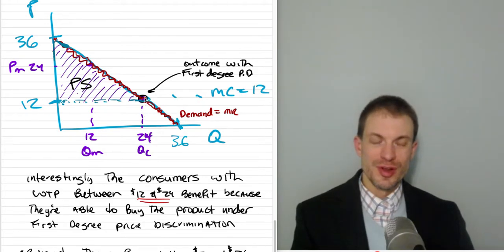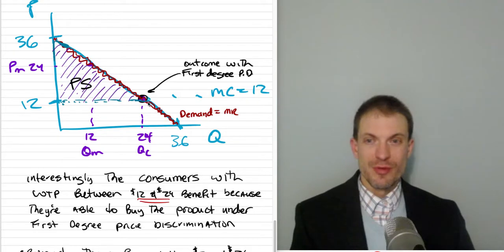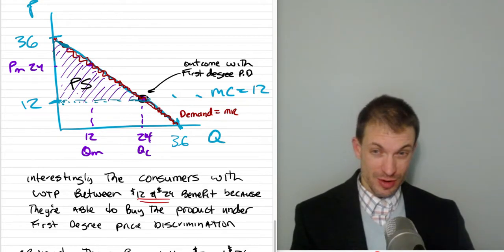You wouldn't sell the 25th unit because now the cost of producing the 25th unit is 12, but the most somebody would pay for it is something less than 12 because the demand curve is below.